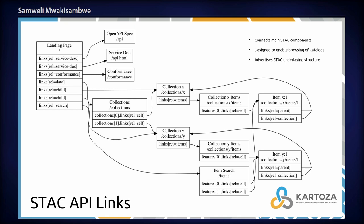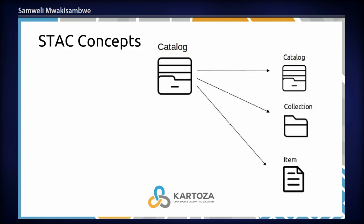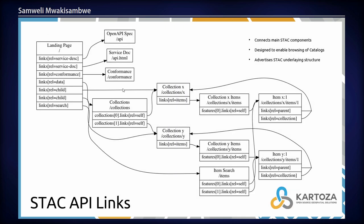If you look at the current slide, you can see there's a root page where users can get all information about the catalog. Then there's a collection endpoint for getting all the collections available on STAC. And down here you can see the items endpoint that you can use to get information for items that have been saved on the STAC catalog.